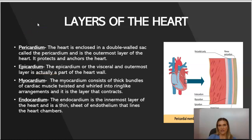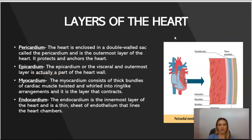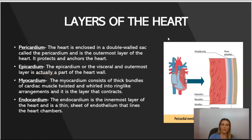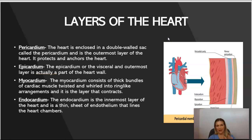There are four main layers of the heart, which you can see in the picture to the right. The pericardium is a double-wall sac and is the outermost layer of the heart; it is used to protect and anchor the heart to the rest of the chest cavity. You also have the epicardium, which is the visceral outermost layer of the heart wall. The myocardium consists of thick bundles of cardiac muscle bound and twisted together.